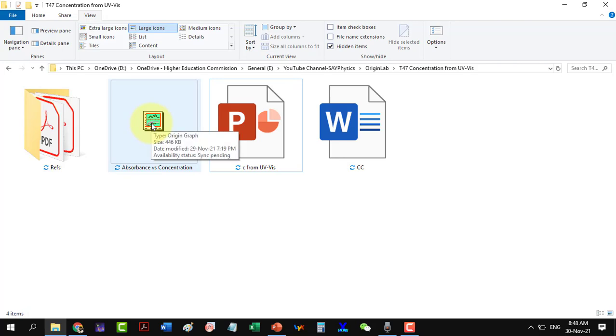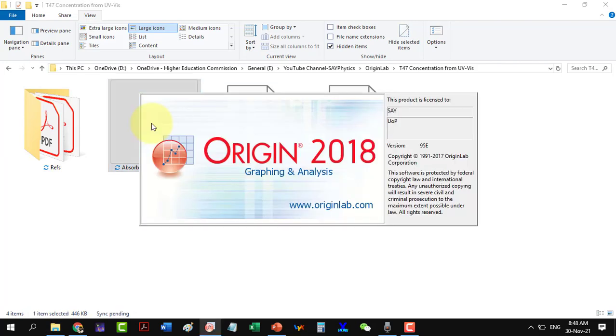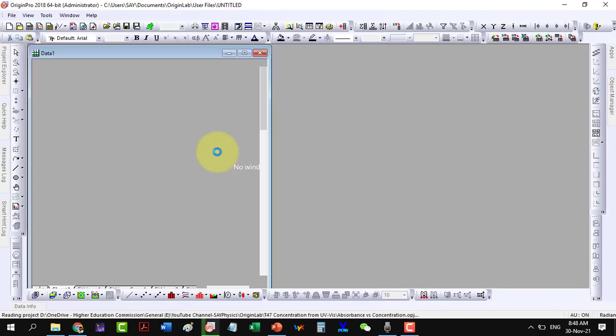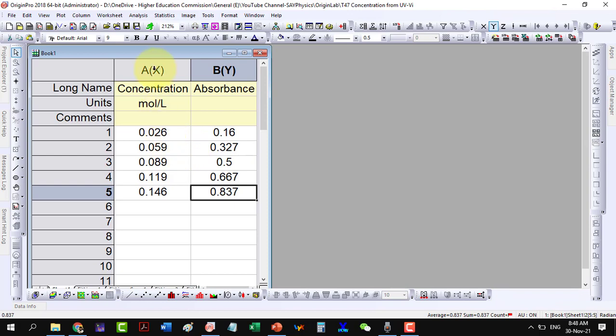Now, let's go to the Origin file where we have already measured the absorption of five different concentrations of a sample. On the x column, we have the known concentrations in mole per liter while in the y column, their respective absorbances.